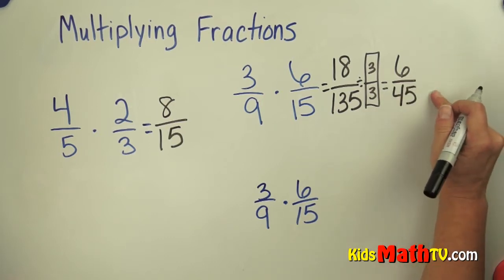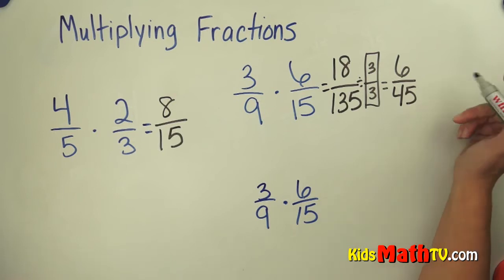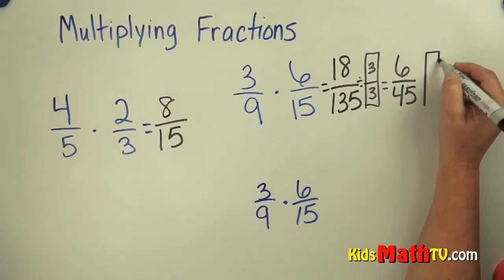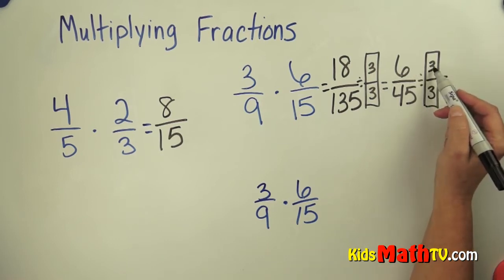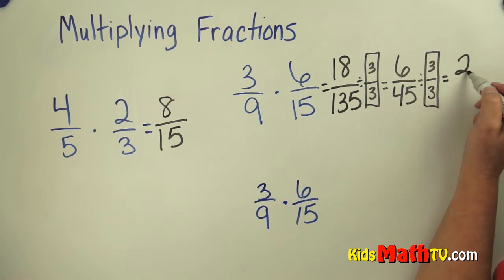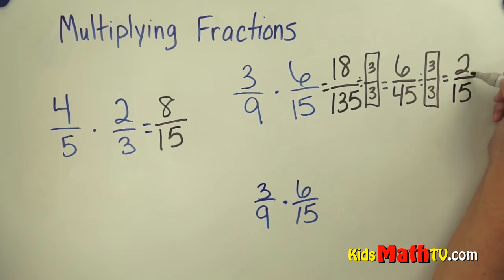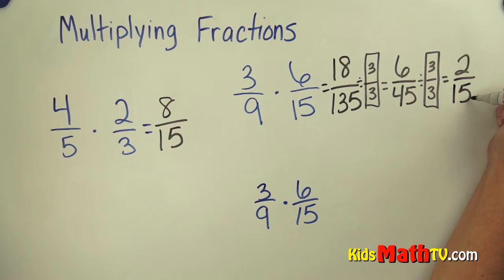And again we check, is there a number that will divide both 6 and 45? And I know that it will again divide by 3 over 3. 6 divided by 3 is 2, 45 divided by 3 is 15. 15 is not even so it will not simplify any further. So we get 2 fifteenths.